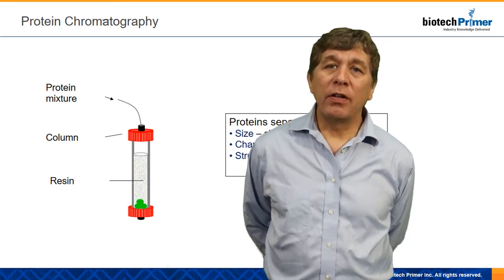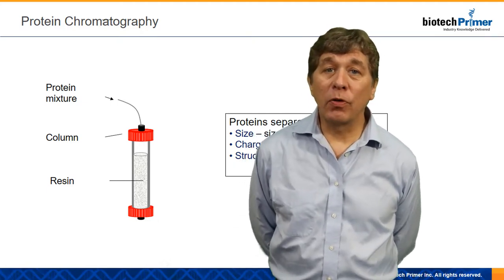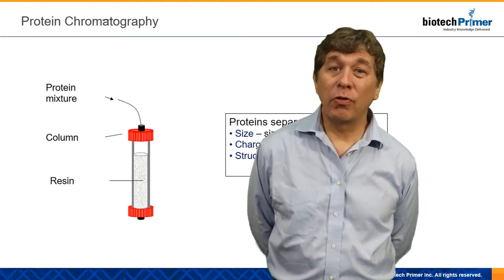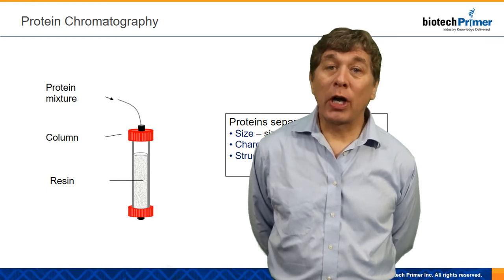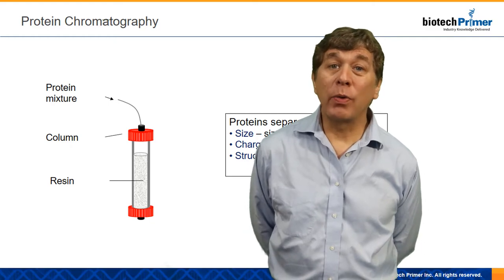They come off the bottom and this is called elution. Now you have to think about this: if we're making a therapeutic protein, we're not making a few milligrams of a protein the way you would do in a research lab. We're making kilograms of protein. So these chromatography columns industrially are really large. They're up to one meter high and three meters across. You could actually sleep in one of those columns if you wanted to.